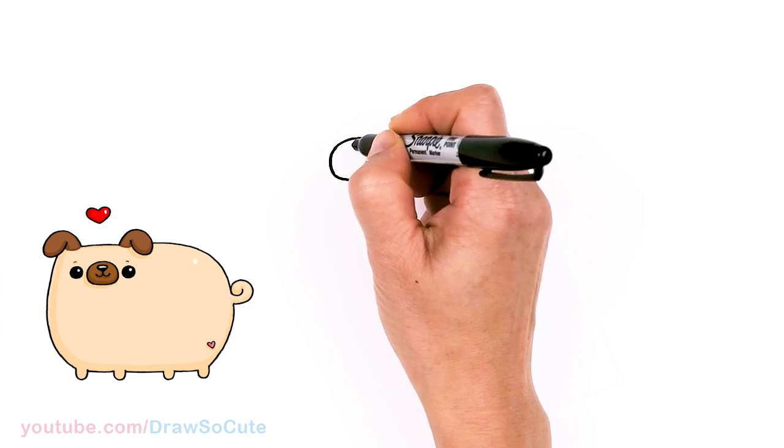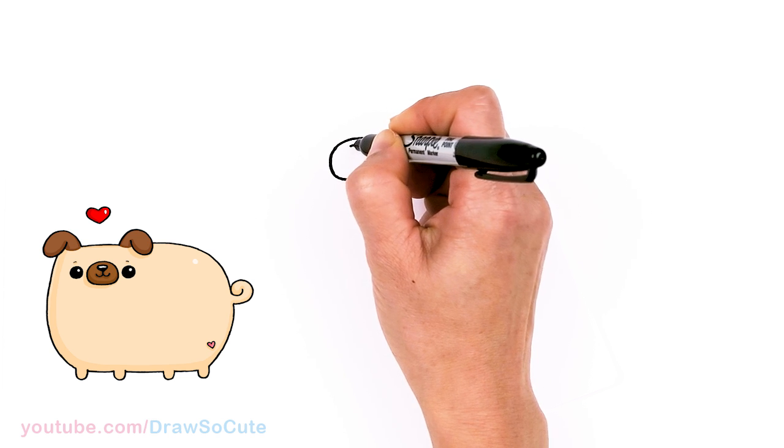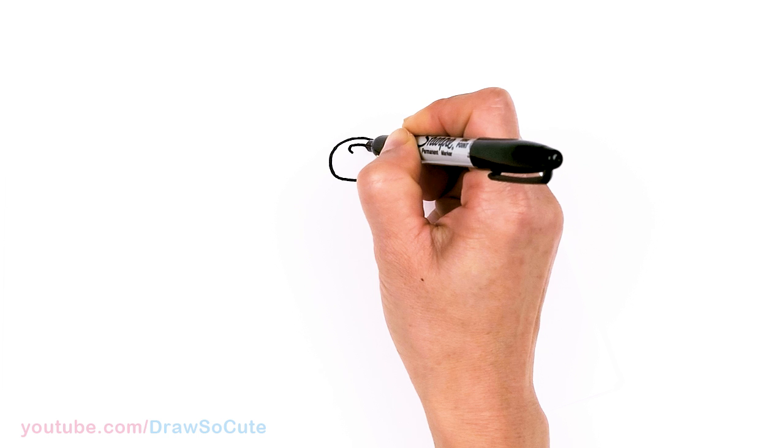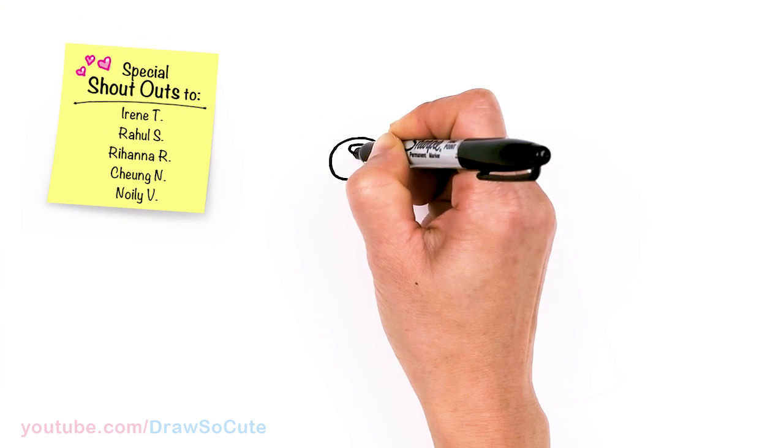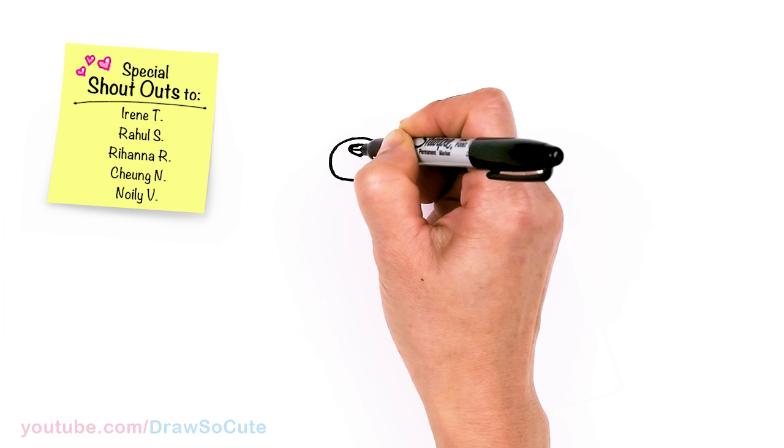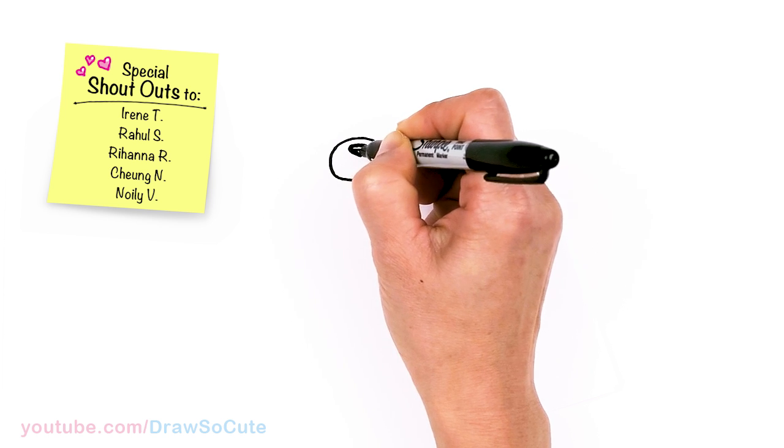Then we're gonna come right back to the center at this top part right here and I'm just gonna draw a curve for the nose, round it off and connect it at the center and I'll just give it a little highlight and then shade it all in.